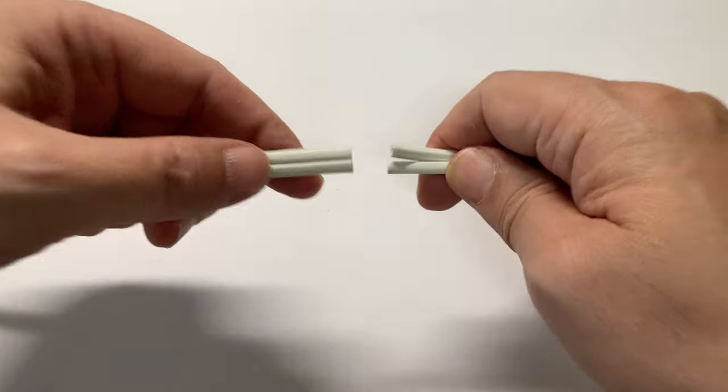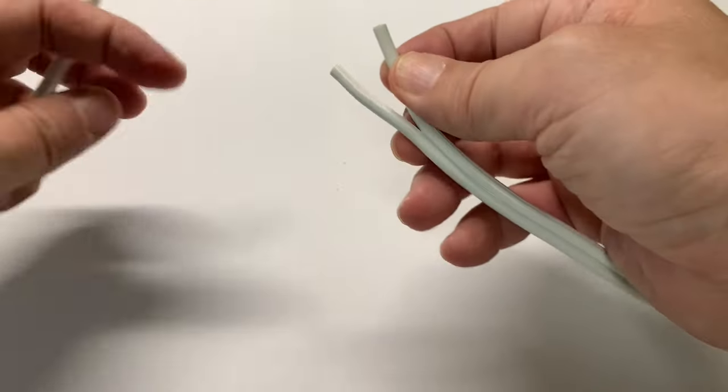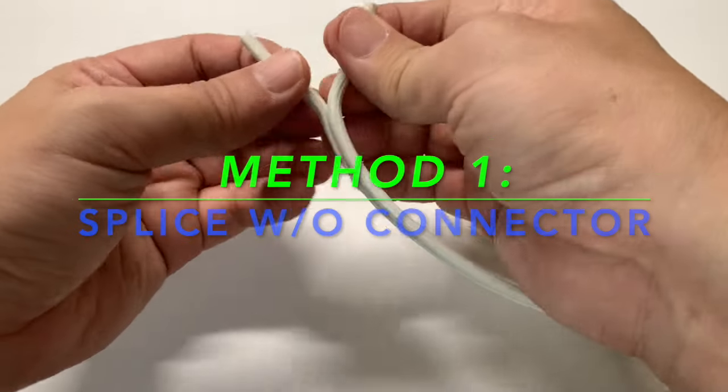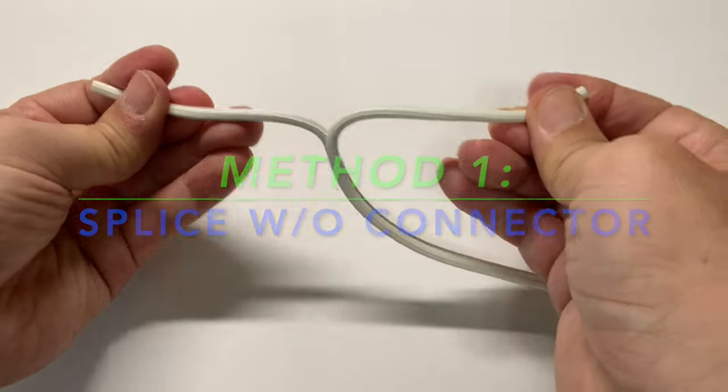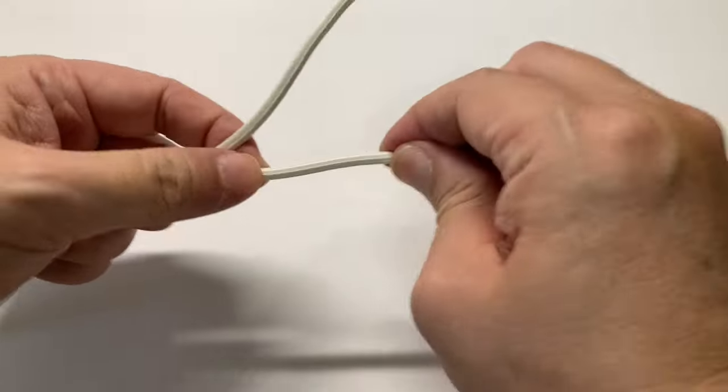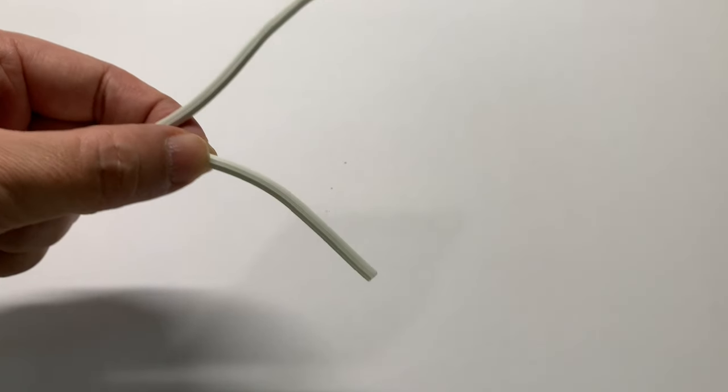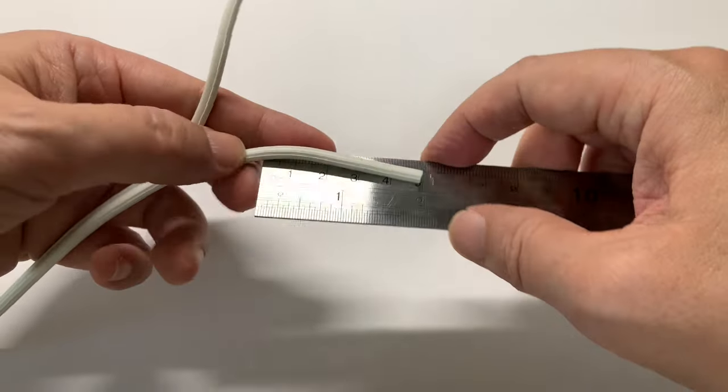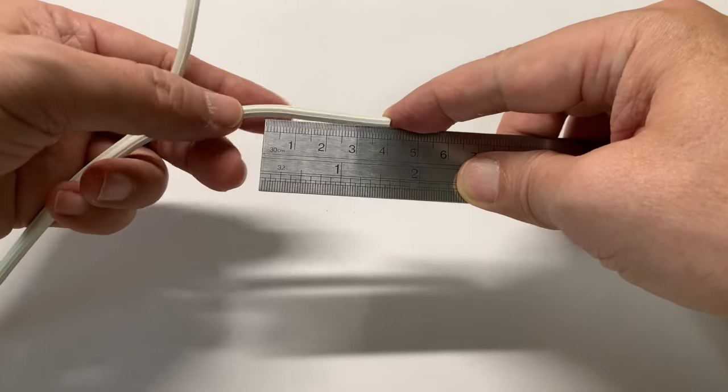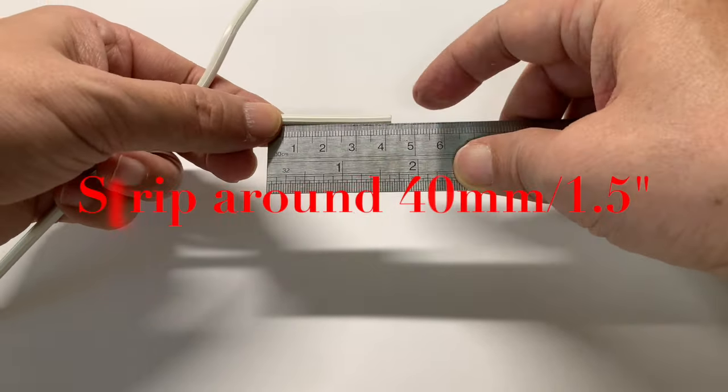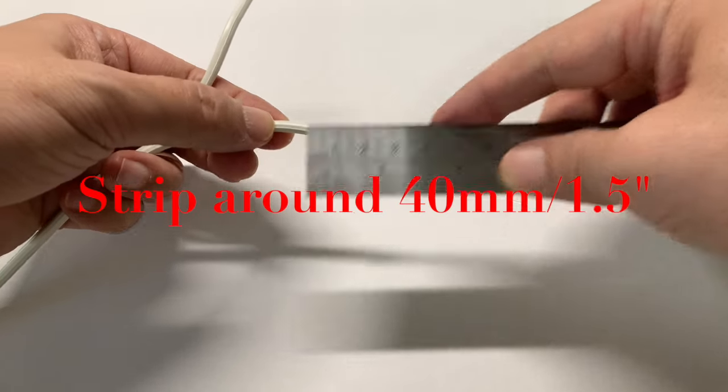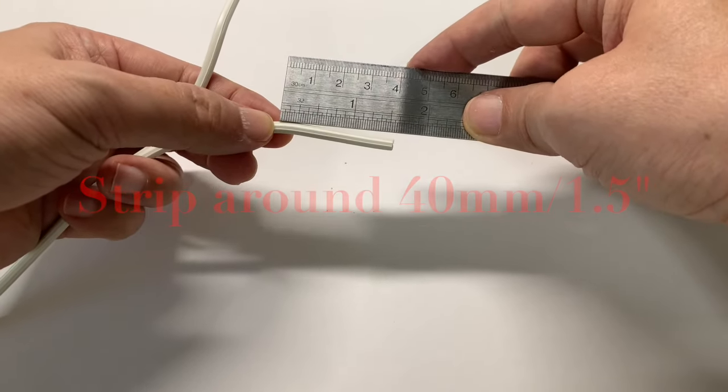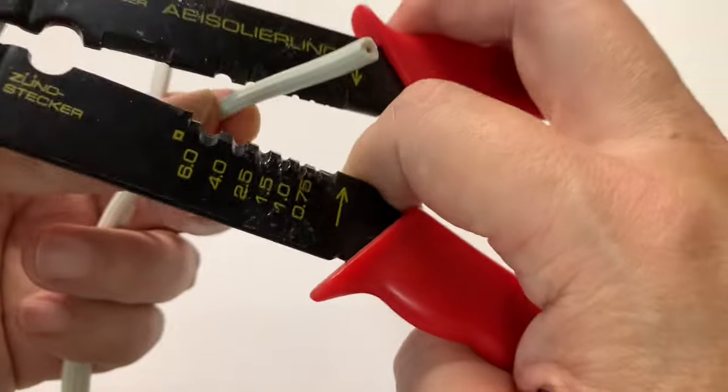Let me show you three correct and reliable splicing methods. In this first method, you don't need any connectors. First, split the pair of the electrical cord to over 50 millimeters or two inches long. Then strip the insulation off to expose around 50 millimeters or one and a half inches.